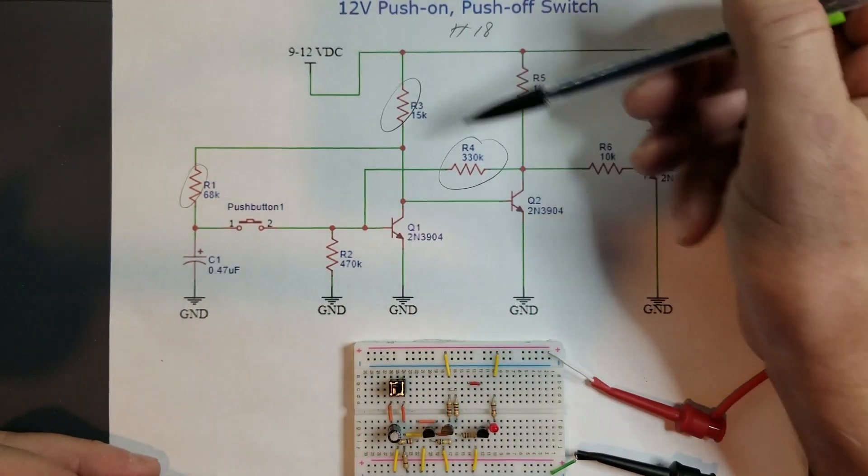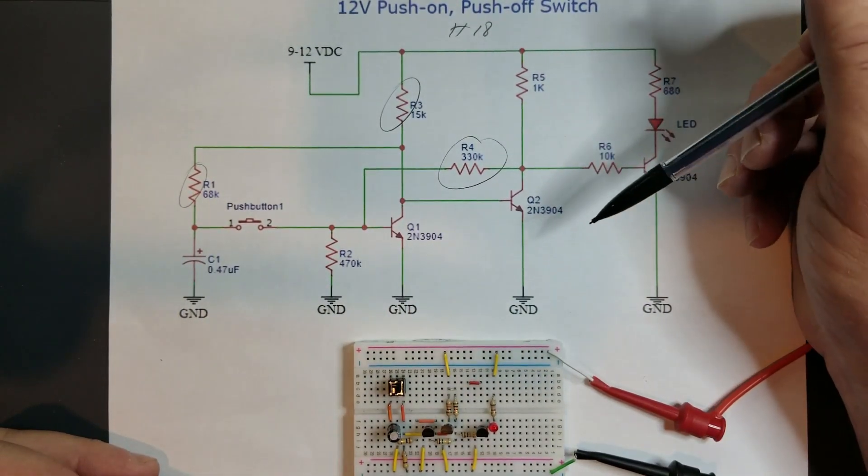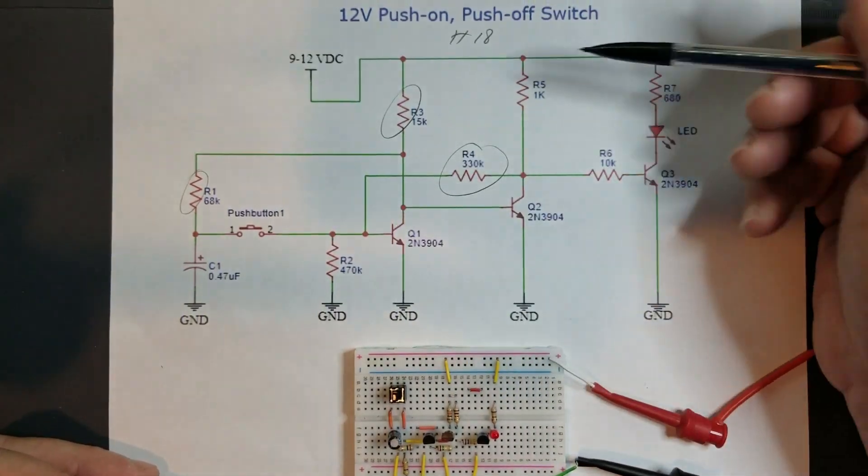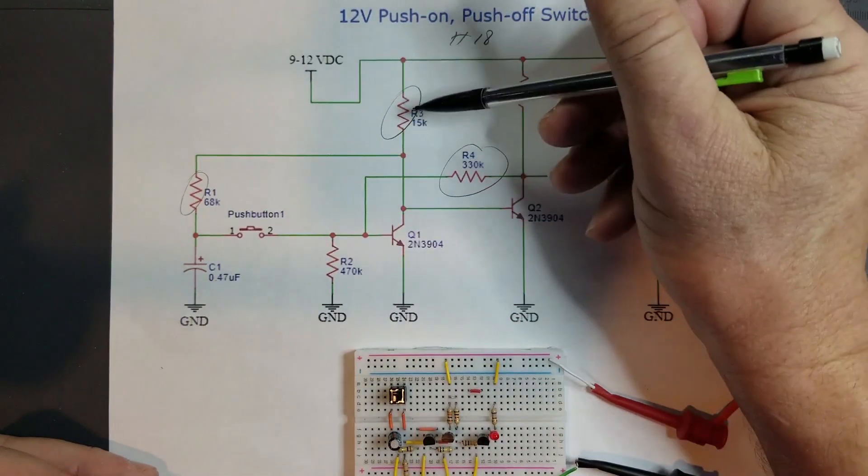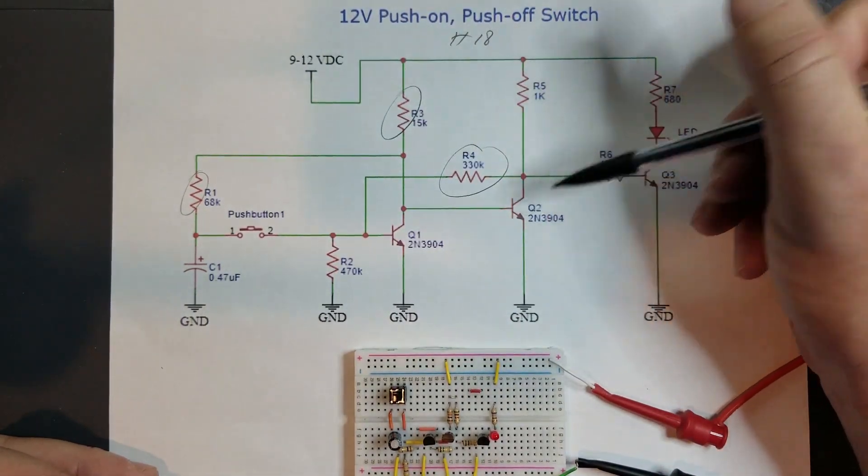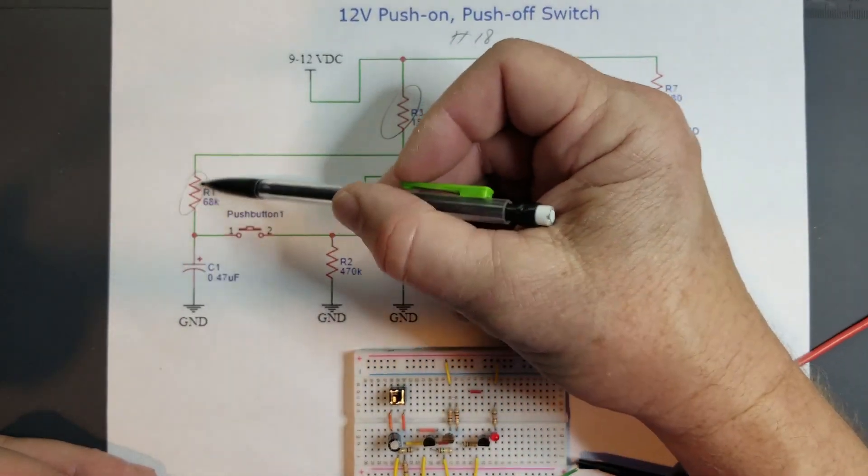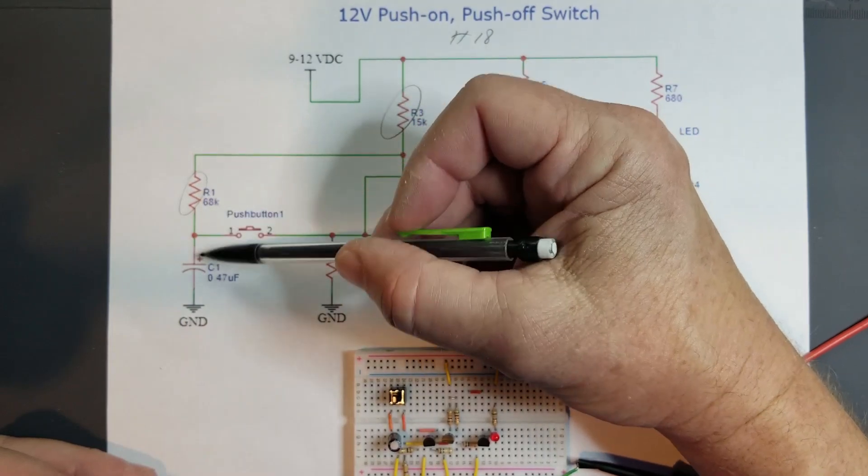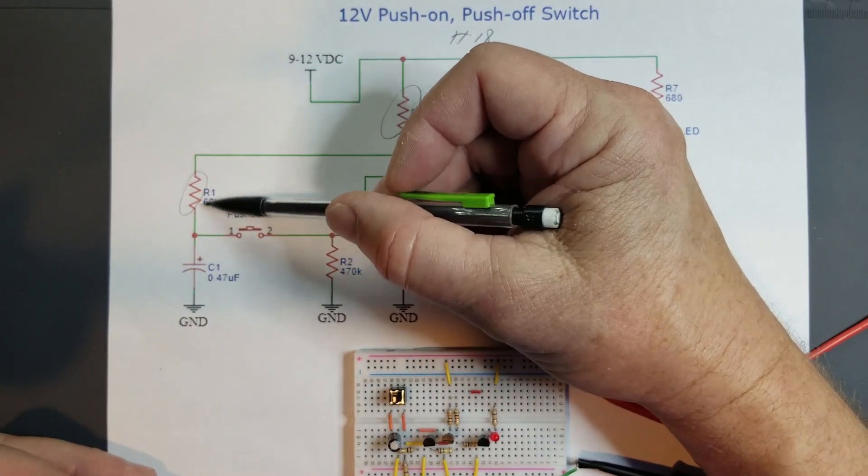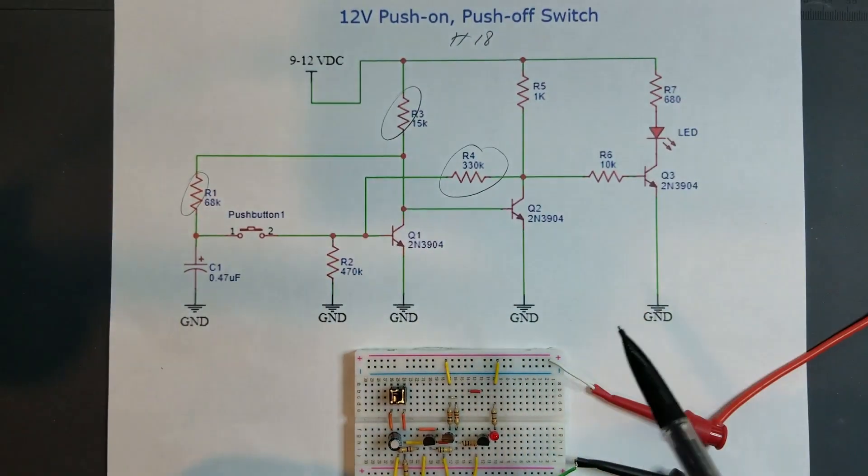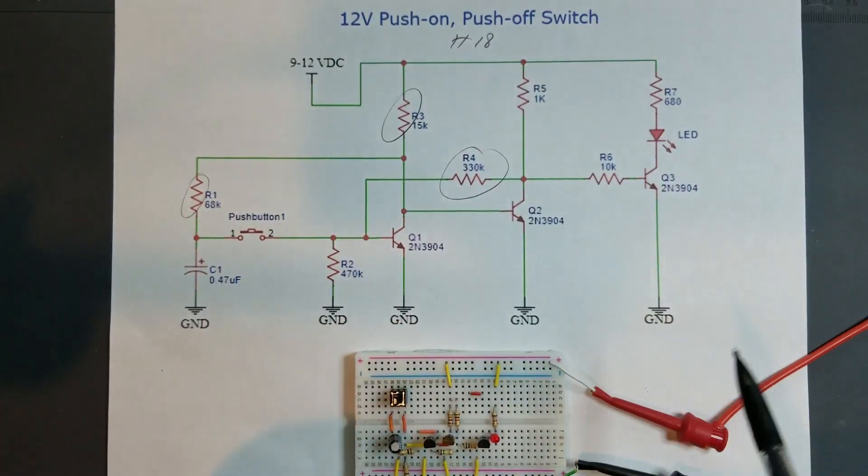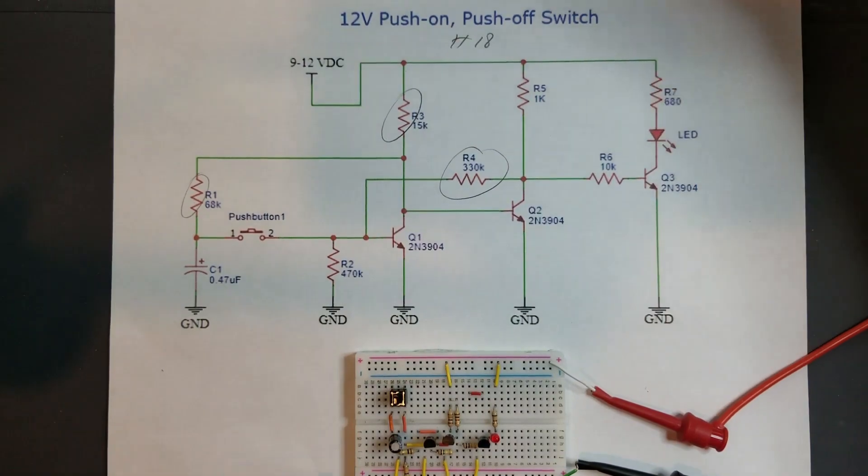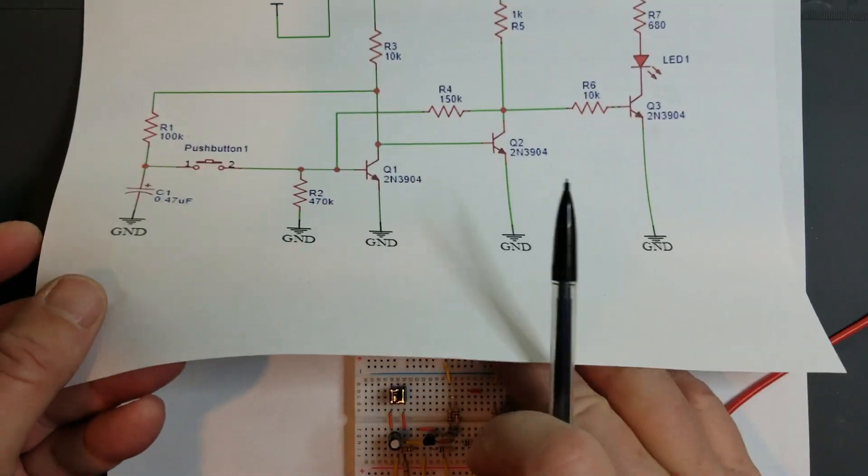The components that I changed from the original circuit here were R1, R3, and R4. Essentially that's the biasing for Q1 and the collector current for Q1, which is also the base current for Q2. And I changed this resistor over here to provide a little bit more tolerance for a bouncy push-button switch.